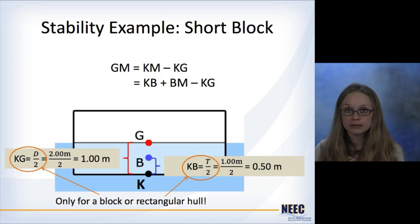For the center of buoyancy, to calculate KB, again it's floating half in the water, half out of the water. It's uniform shape with this rectangular shape. So KB is just the draft divided by 2. So in this case, KB is 0.5 meters.